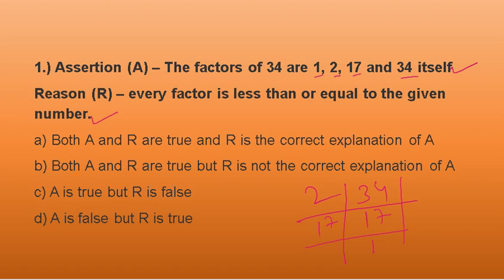You see, 1 is less than 34, 2 is less than 34, 17 is less than 34, and 34 equals 34. So my reason is correct. I will go with option A. Both A and R are true and R is the correct explanation of A.